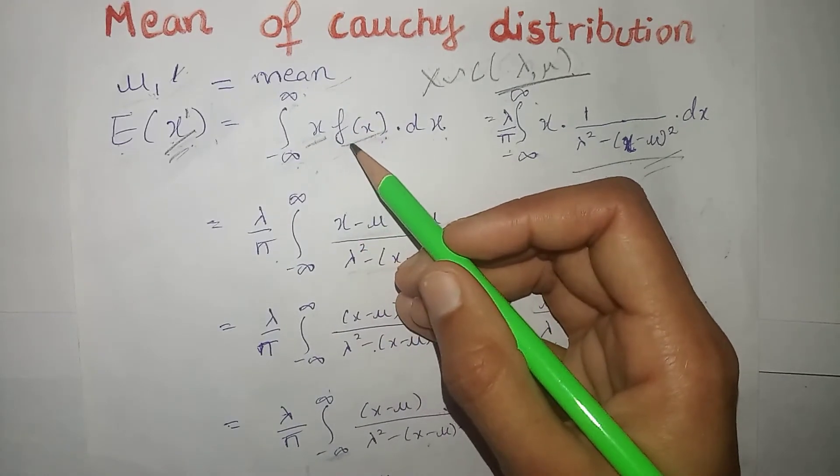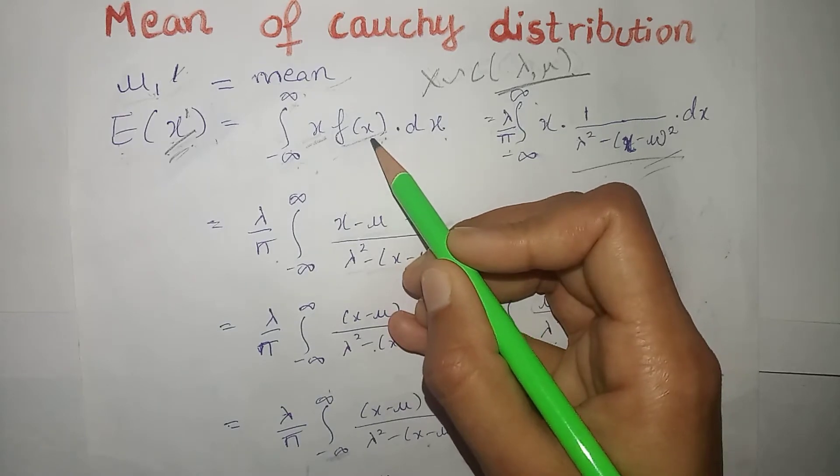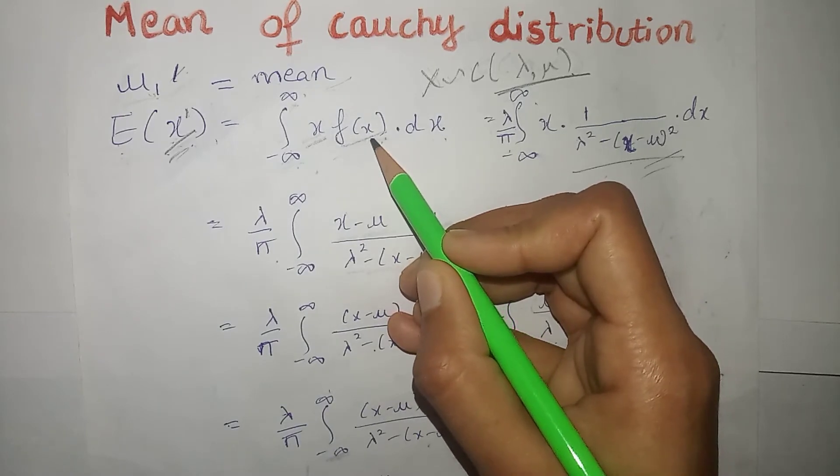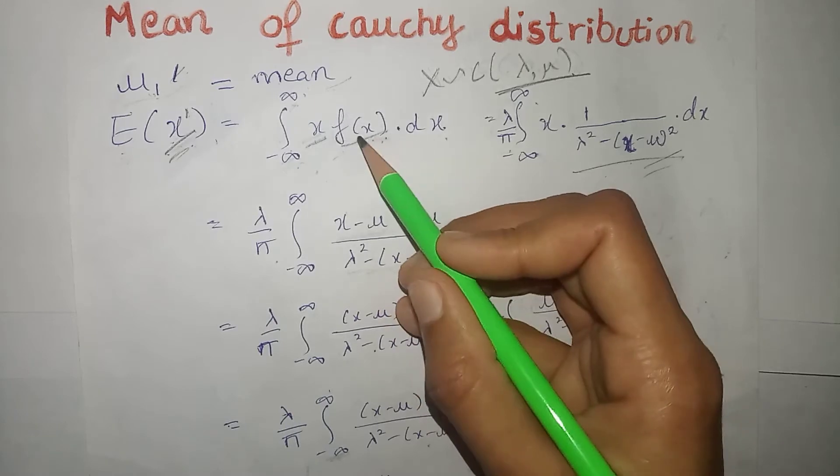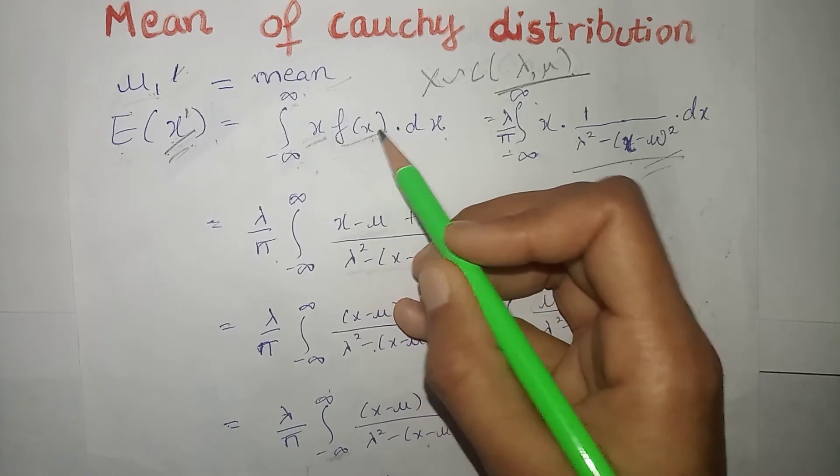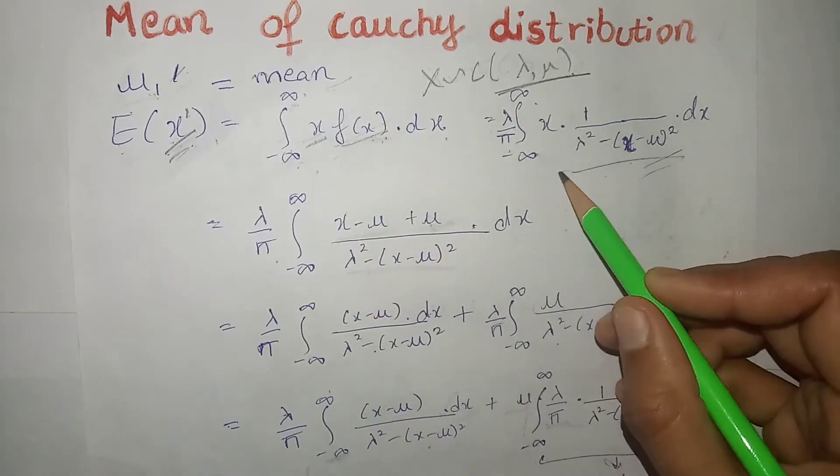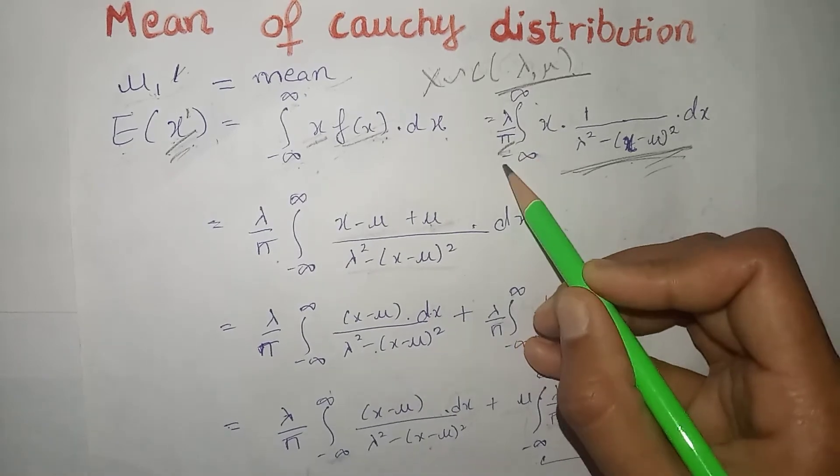Now, Cauchy distribution humara continuous distribution hai, that's why humne pdf, that is probability density function ka hai. Agar humari discrete distribution hoti to hum pmf, that is probability mass function kahte. Humne value put kar di pdf ki humari, jo ki yeh thi, and yeh thi.